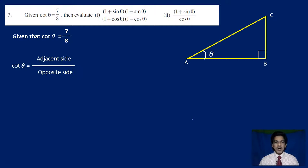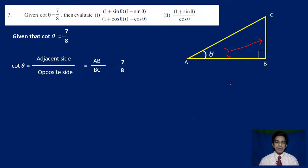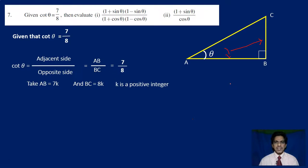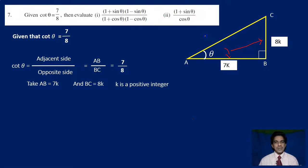Cot is actually adjacent side by opposite side. The adjacent side of theta is AB and the opposite side is BC. So cot theta equals AB by BC, which is given as 7 by 8. We will take AB equal to 7K and BC equal to 8K, where K is a positive integer. Now we have the adjacent side and the opposite side, but we don't have the value of the hypotenuse.